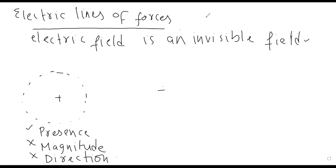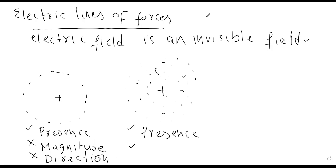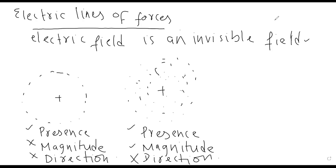Doosri representation: dot representation of electric field. Chhote dots banaye gaye positive charge ke qareeb. Dot representation se kya clear hota hai? Ek to electric field ki presence clear hoti hai. Uske baad electric field ka magnitude clear hota hai — kyunki agar charge ke qareeb aaenge to magnitude badhega, agar door le jaenge to magnitude kam ho jayega. Lekin yahan se bhi direction ka concept clear nahin hua.